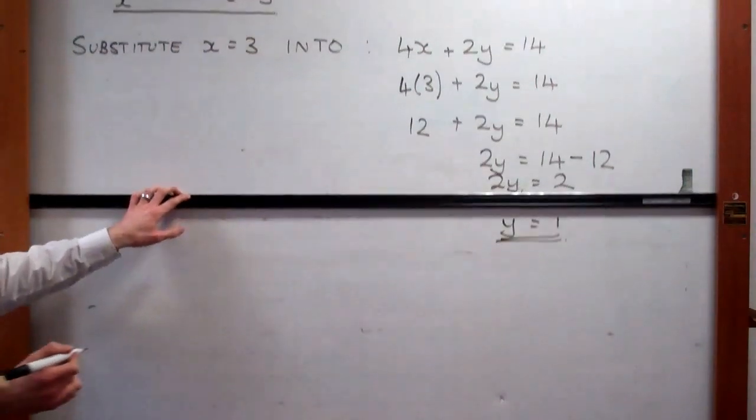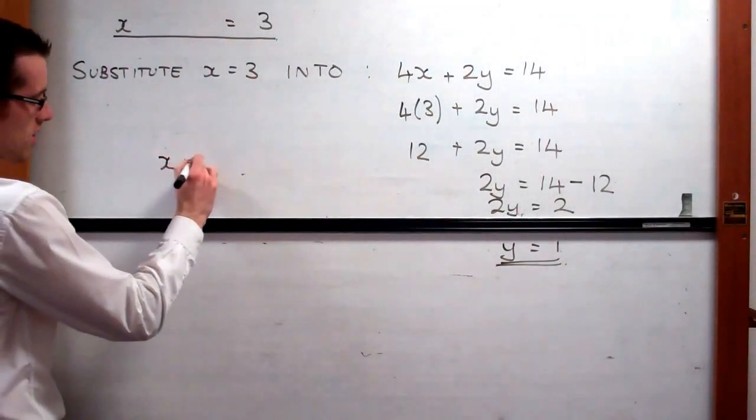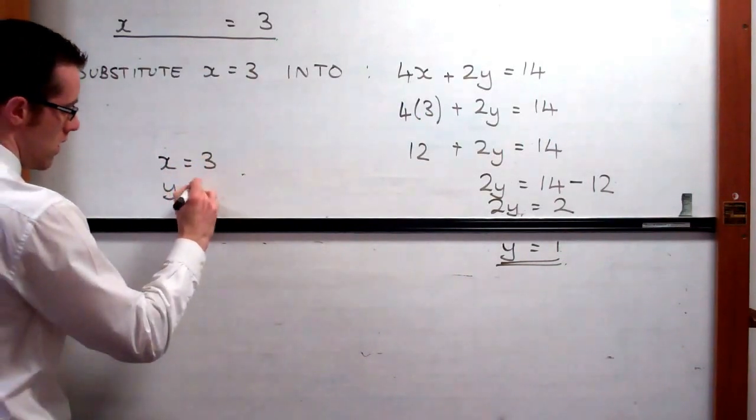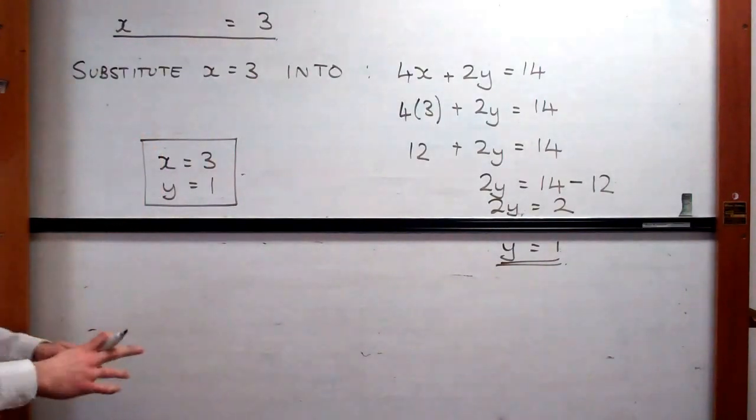So our solution for this set of simultaneous equations, our system, is x equals 3 and y equals 1. And that's it.